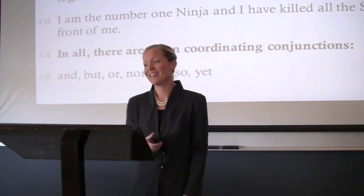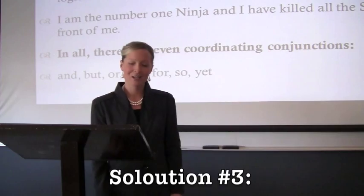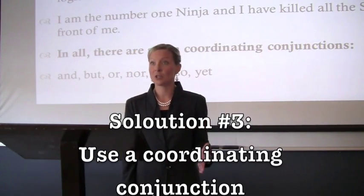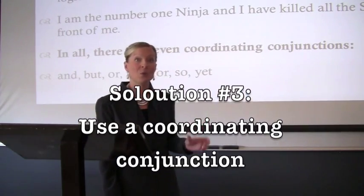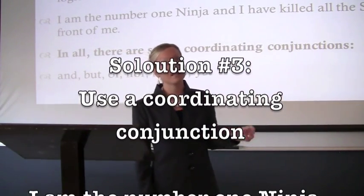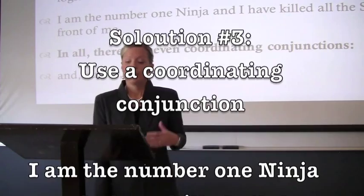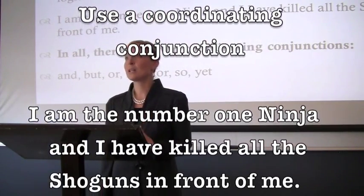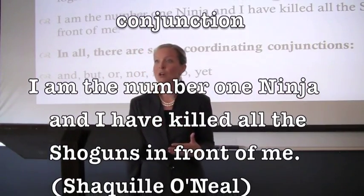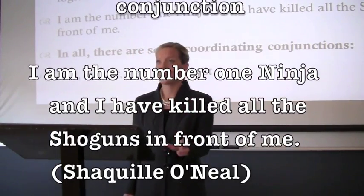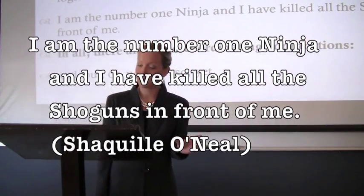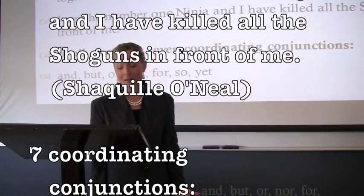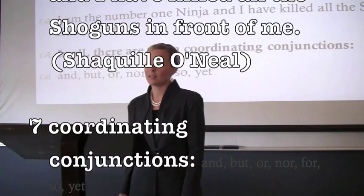Solution number three is to use a coordinating conjunction. Remember, a conjunction is a word that joins two words, a phrase, a clause, or a sentence together. So you can indicate through a coordinating conjunction a logical connection between two independent clauses: 'I am the number one ninja, and I have killed all the shoguns in front of me.'